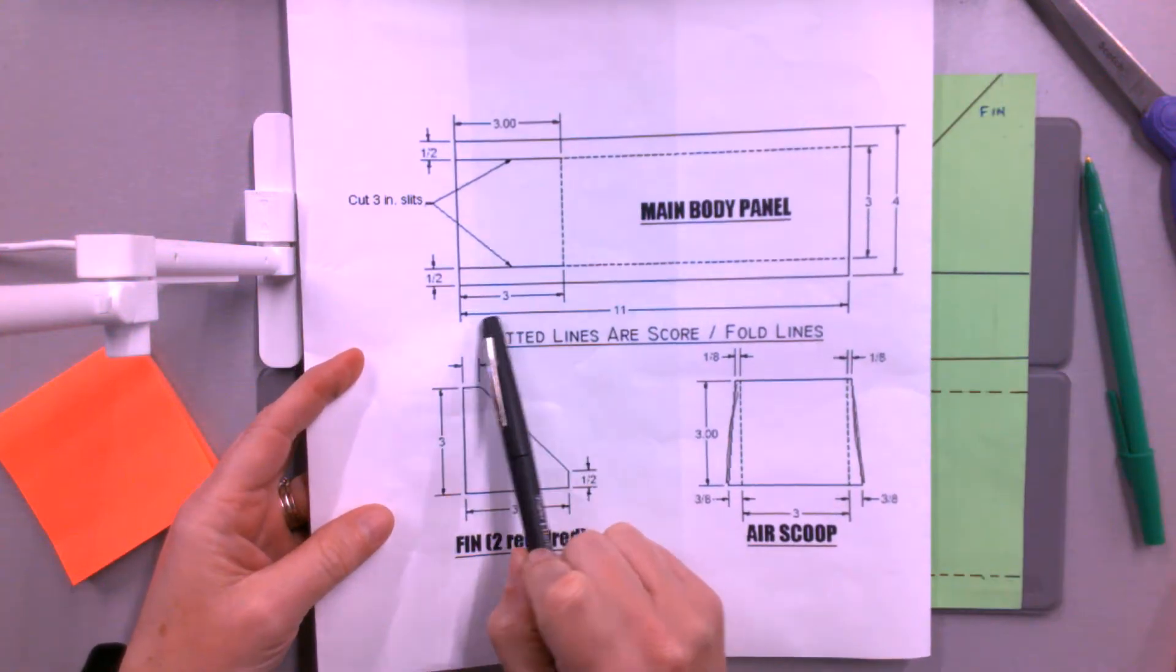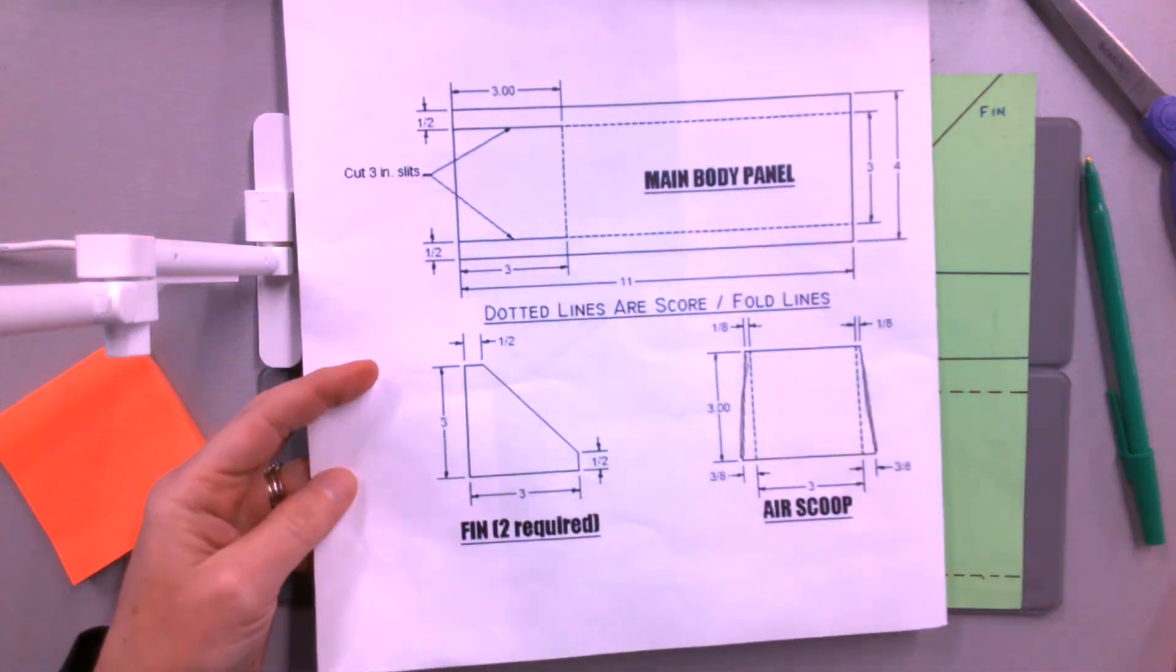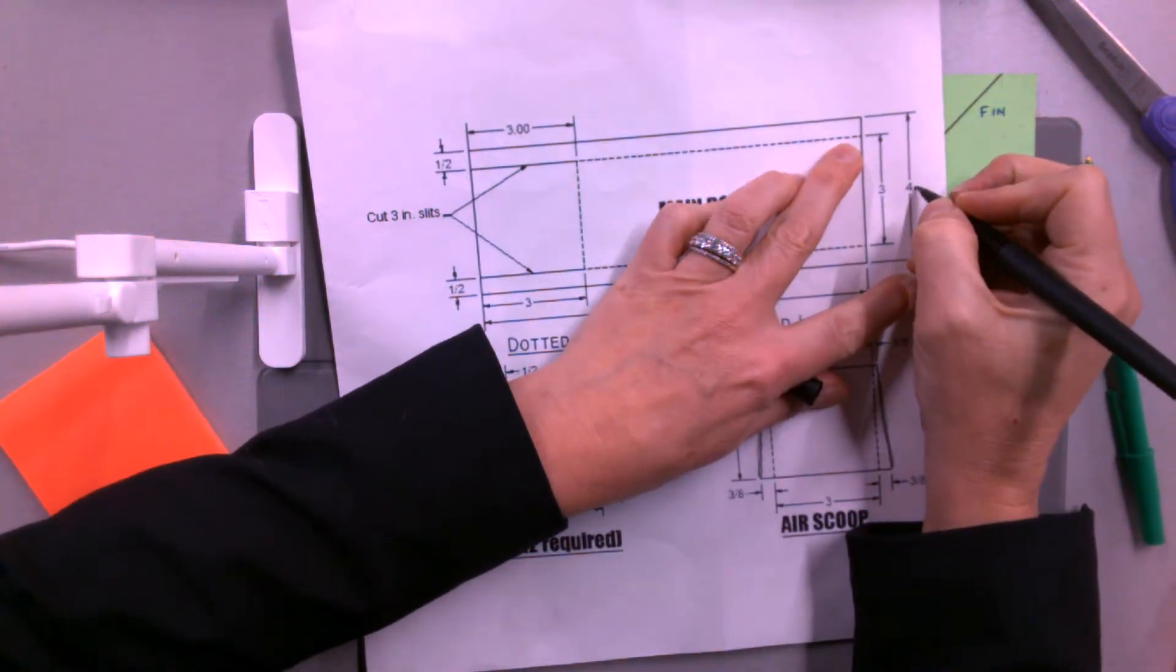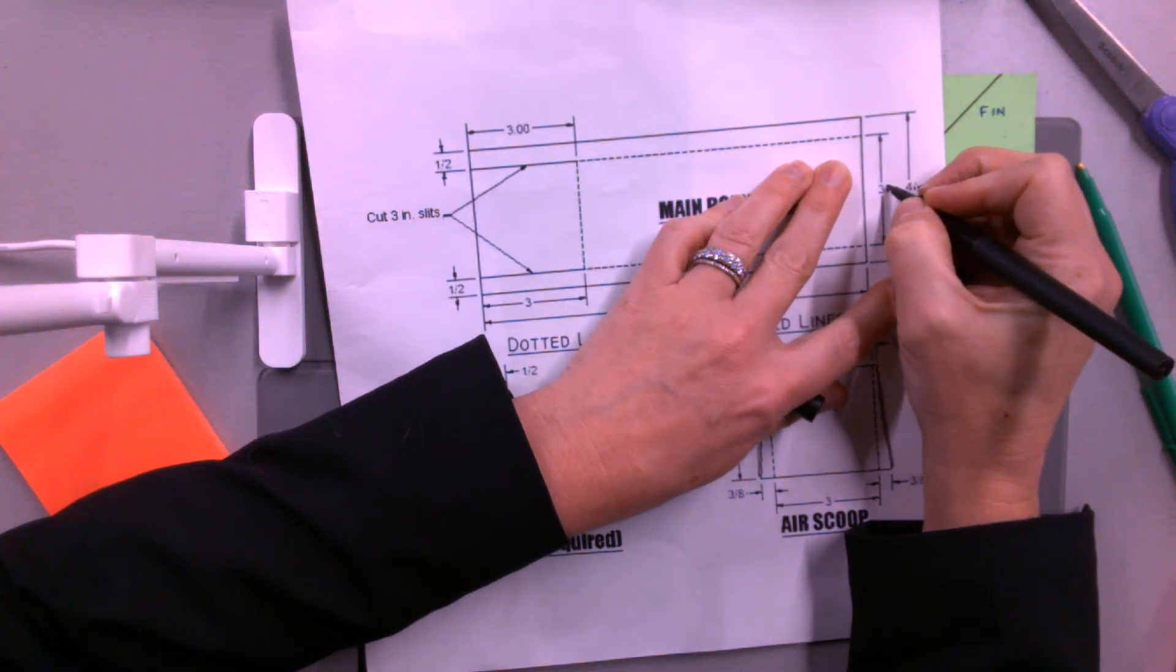The main body panel should be 11 inches wide, which is really easy because it's the full width of the paper. These lines here mean inches.